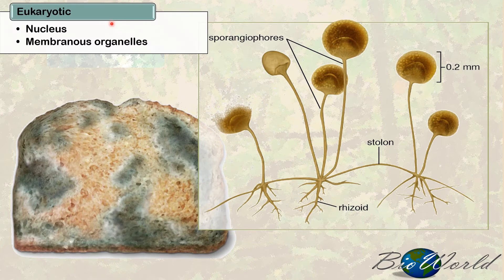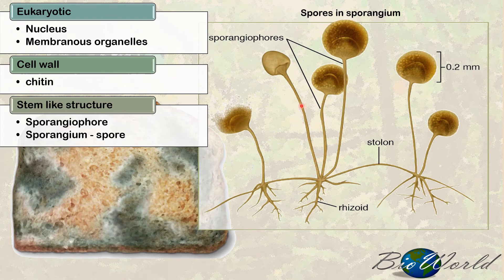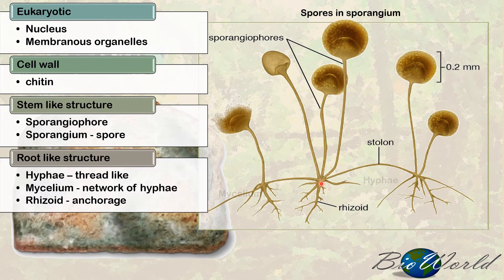Firstly, all cells that make up the Rhizopus are eukaryotic, just like in kingdom protoctista — meaning the cells have both a nucleus and membranous organelles. The cells have a cell wall, but the cell wall in kingdom fungi is different from kingdom protoctista. The alga in kingdom protoctista have a cell wall made of cellulose, whereas in fungi the cell wall is made of a polymer called chitin, which is a polymer that is a mix of carbohydrate and protein. The physical structure of kingdom fungi has a stem-like structure called a sporangiophore, which circles into a sporangium containing spores. It also has a root-like structure called hyphae, and when there is a network of hyphae it is called a mycelium.